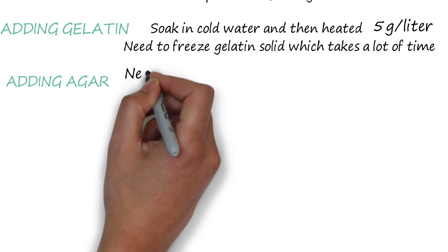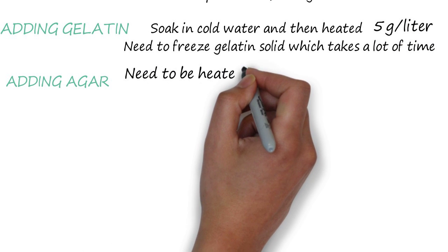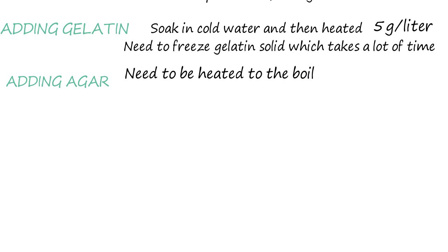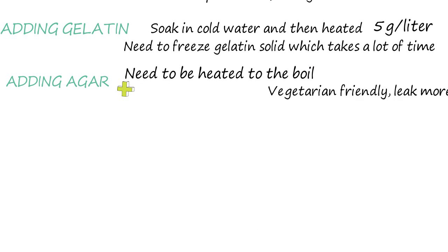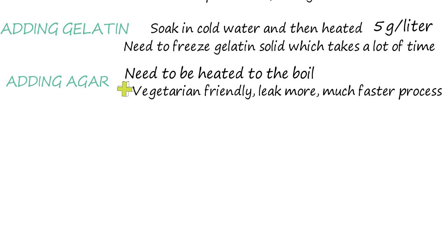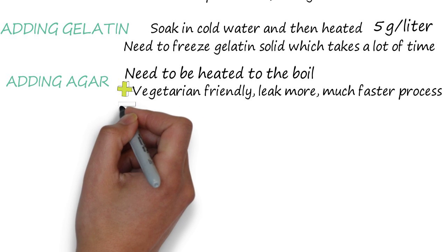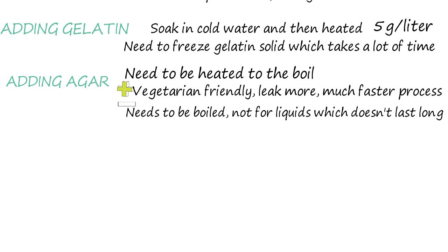Adding agar. Agar needs to be heated to the boil to be dispersed into the liquid. It has many advantages: it is vegetarian friendly, it leaks more than gelatin, and the gel forms before the process begins so you can verify that it will work. It is also a much faster process.